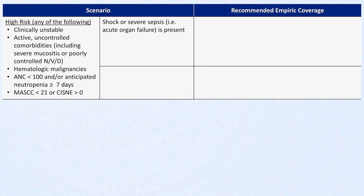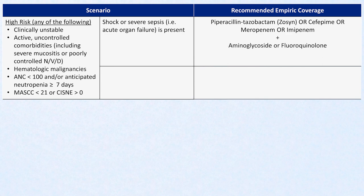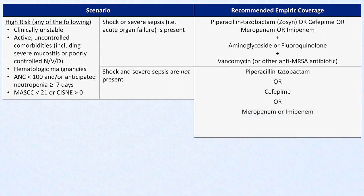In the case of shock or severe sepsis, very broad empiric coverage should be started, with expert opinion recommending either piperacillin-tazobactam (commonly known as Zosyn), cefepime, meropenem, or imipenem, plus either an aminoglycoside or a fluoroquinolone, plus vancomycin or another anti-MRSA antibiotic. Anecdotally, aminoglycosides are rarely used empirically in this situation. If neither shock nor severe sepsis is present, only one agent from the first subset is indicated unless there is visible evidence of skin or soft tissue infection or pneumonia is suspected, in which case additional MRSA coverage would be appropriate.